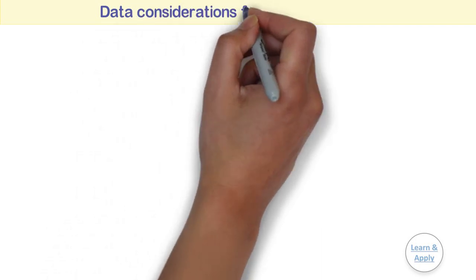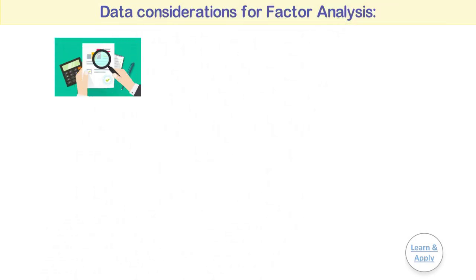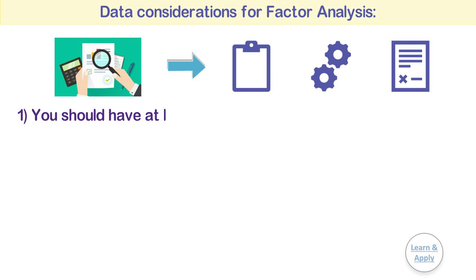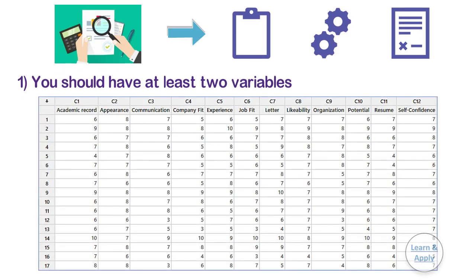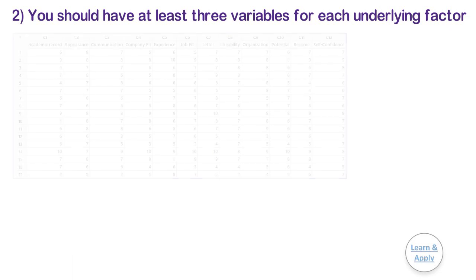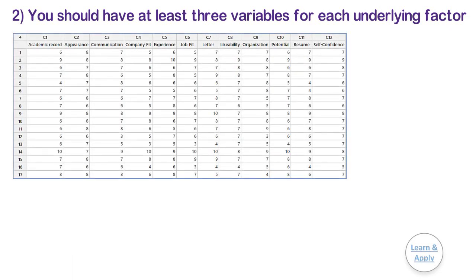Data considerations for factor analysis. To ensure that your results are valid, consider the following guidelines when you collect the data, perform the analysis, and interpret your results. First, you should have at least two variables, and the measurements for each variable should be recorded in separate numeric columns. Second, you should have at least three variables for each underlying factor. Generally, you should not have more than one factor for every three variables in your data. For example, if you have 12 variables, then you should extract at most four factors.